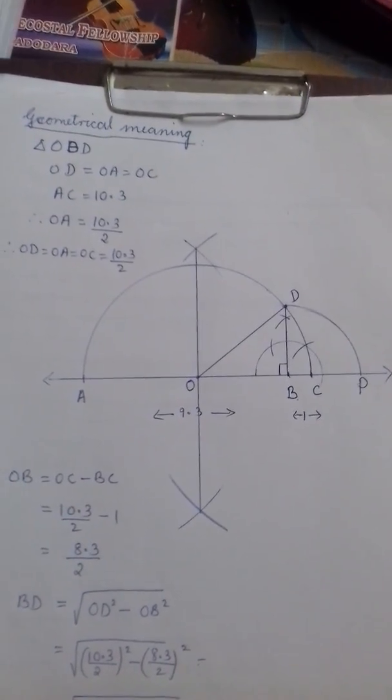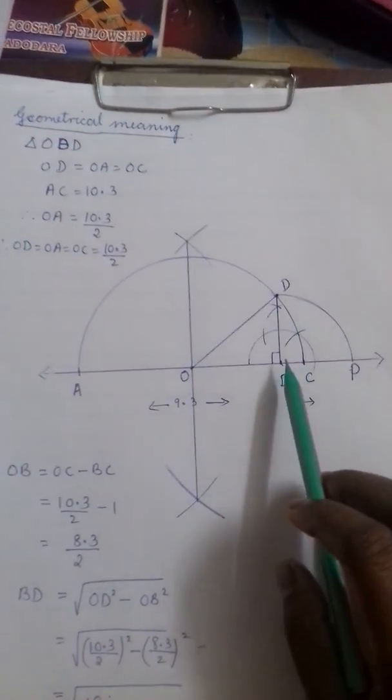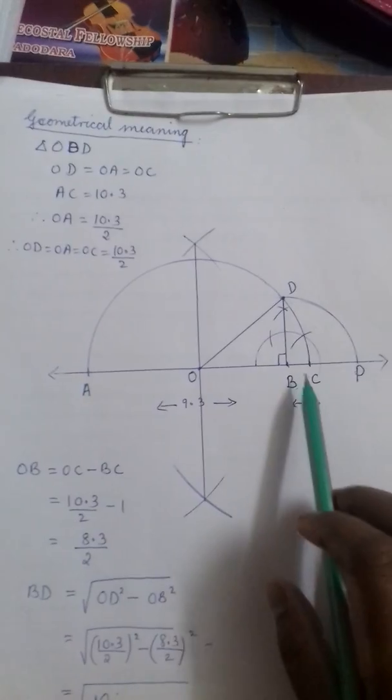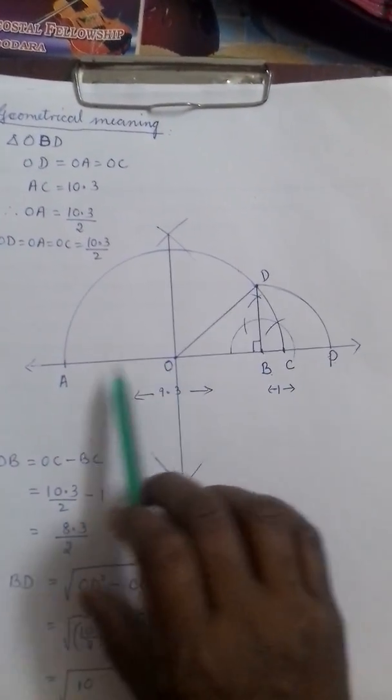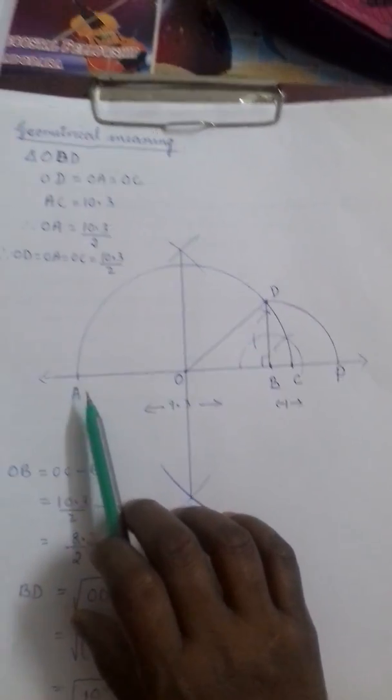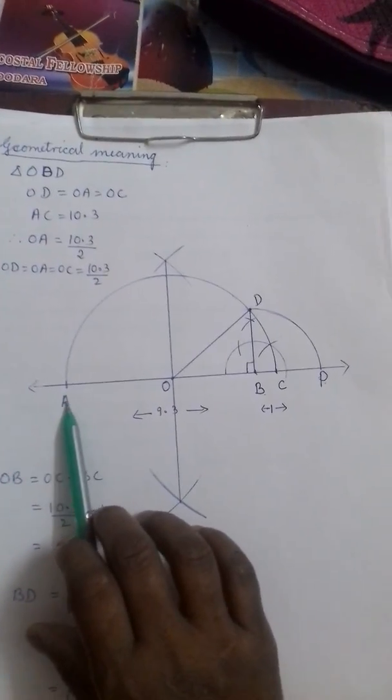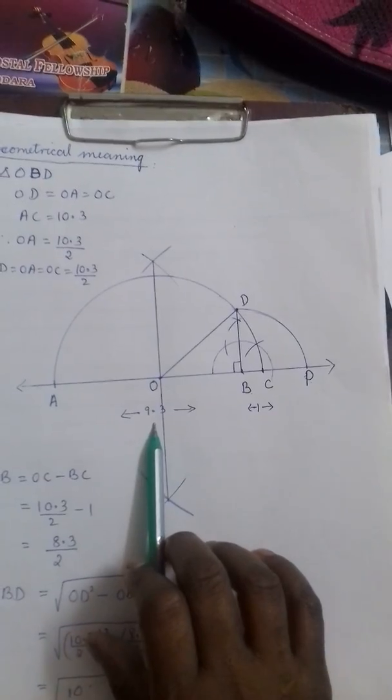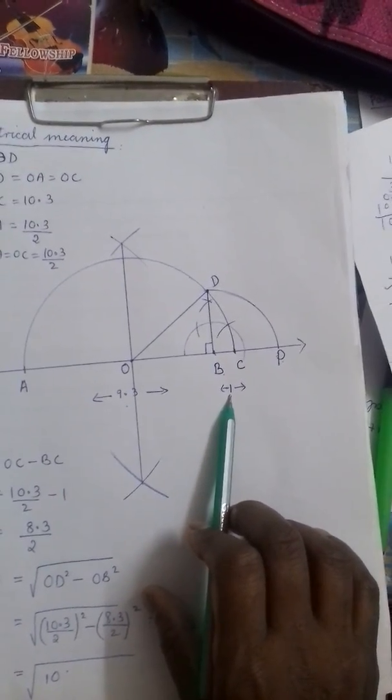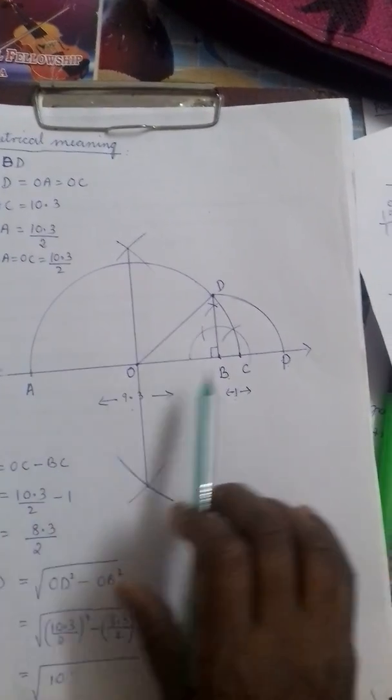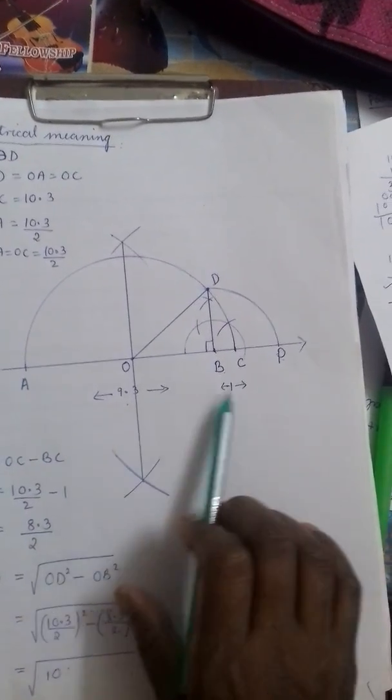Now let's think of the geometrical meaning and what does the value BD, BP or P, OD, OC, OA etc represent. In construction part we have taken AB is equal to 9.3 and BC equals 1 cm. So we can say AC is 10.3.